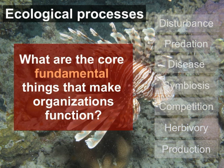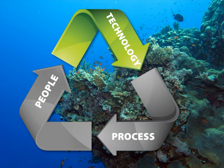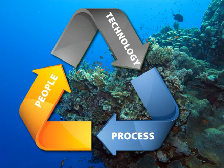What are the core fundamental things that make organizations as ecosystems function? People who are involved in technology will be familiar with the notion of technology, process, and people — these are three core fundamental processes that make organizational systems work. Oftentimes when people look at ICTs in an organization, the focus is on the technology, and enormous effort goes into choosing the right technology. But there's little risk in technology. Technology generally works. Even bad technology with lots of bugs — you can fix the bugs and make it work. The key focus should be on processes and people, but it rarely is.